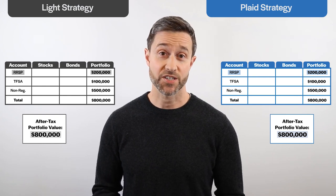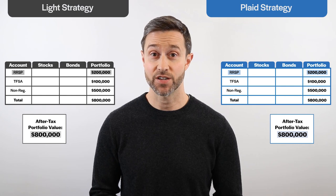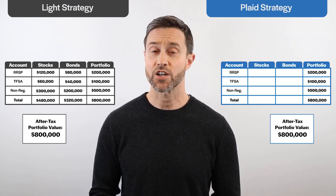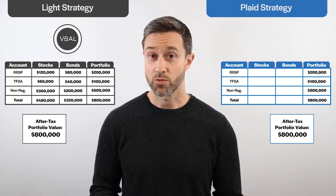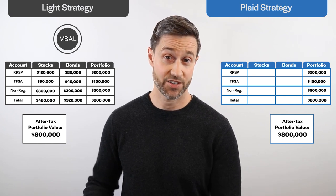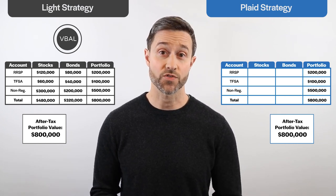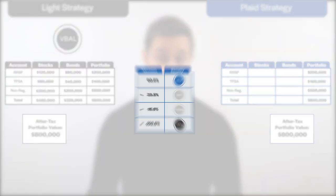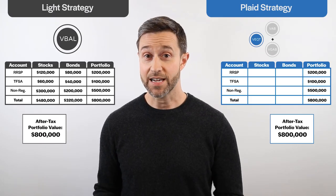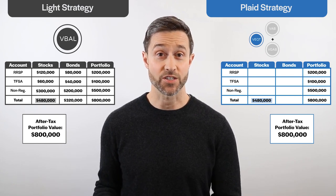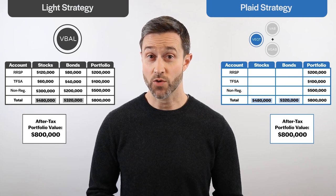Just like in our last video, we'll target a 60% stock, 40% bond after-tax asset allocation for our light asset location strategy, holding the same asset mix across all accounts. This can be accomplished by holding the Vanguard balanced ETF portfolio, or VBAL, in each account. We'll target the same 60-40 after-tax asset mix for our plaid strategy, using the same funds as our ludicrous asset location strategy in Part 2: the Vanguard All-Equity ETF portfolio (VEQT) for stocks, the Vanguard Canadian Aggregate Bond Index ETF (VAB), and the Vanguard Global Aggregate Bond Index ETF CAD Hedged (VGAB). In both strategies, we'll allocate $480,000 to stocks and $320,000 to bonds.